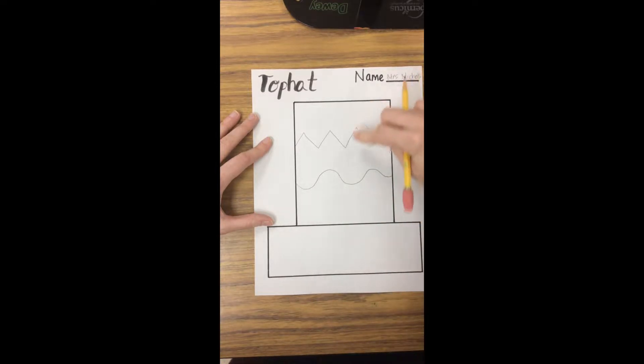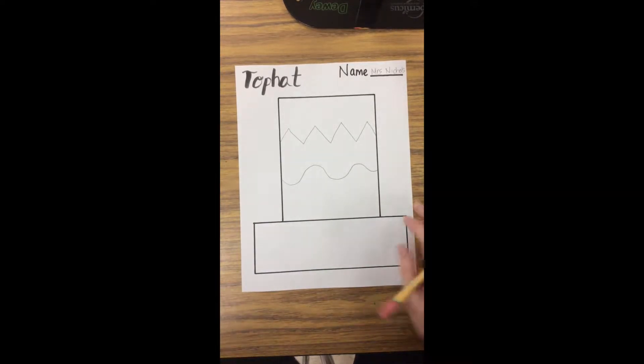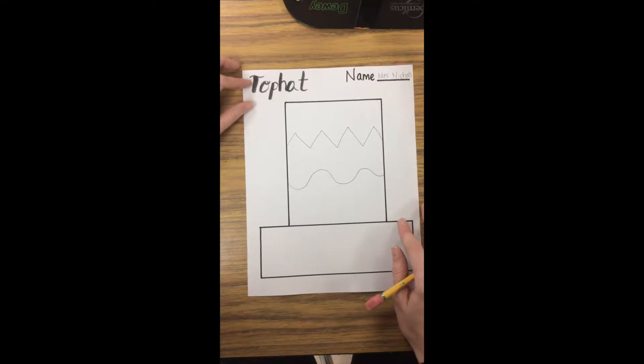So that I now have one, two, three, four sections that I can draw shapes in, and I want to do shape patterns. So I could pick two shapes to start with.